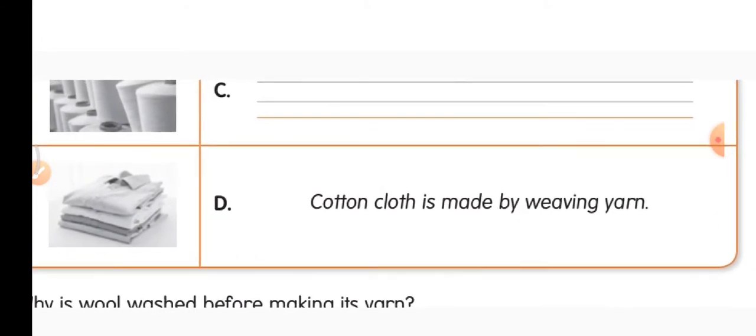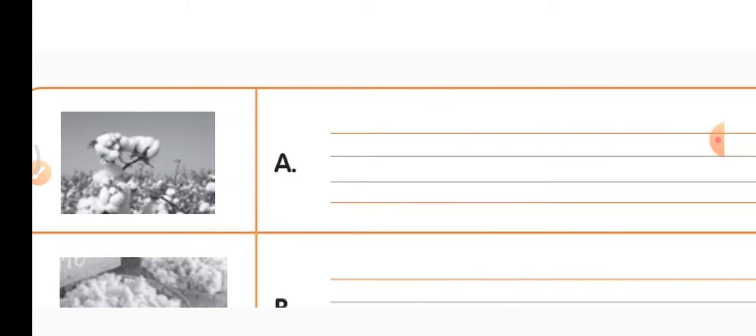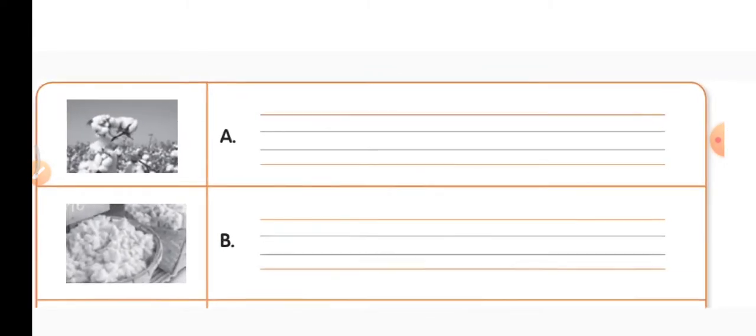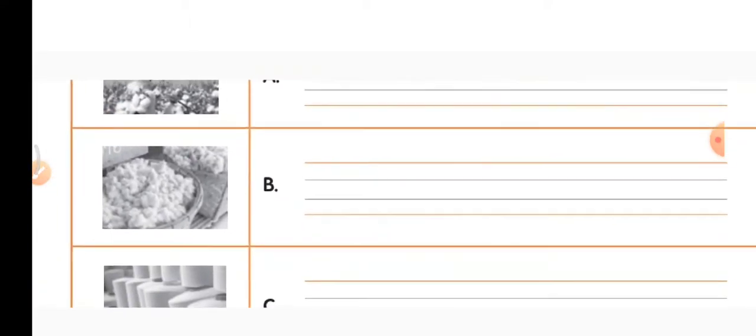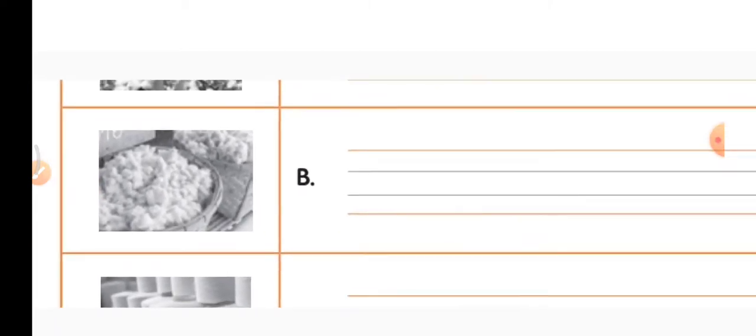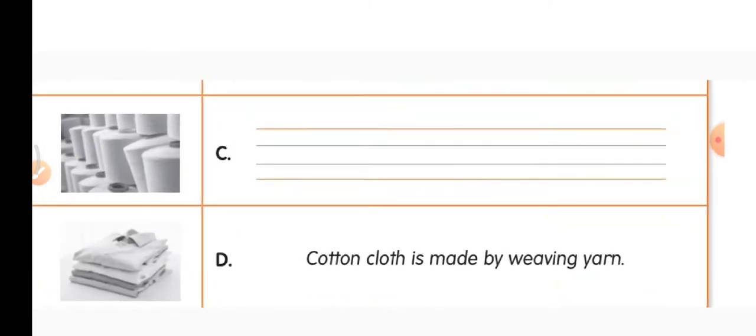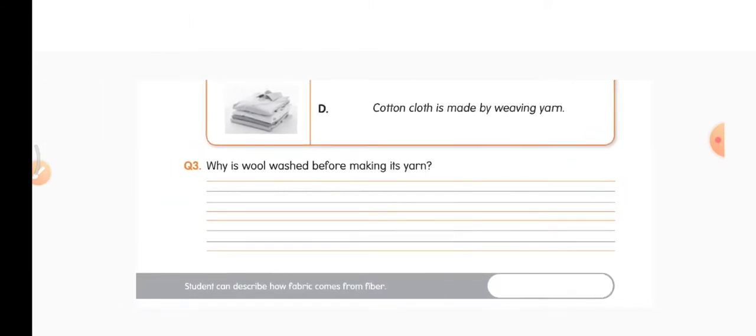Question two: look at the pictures and fill in the table — one has been done for you. Cotton fiber is grown on plants. Wool is collected from the sheep. Then yarn is made. Describe each picture accordingly.